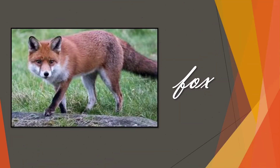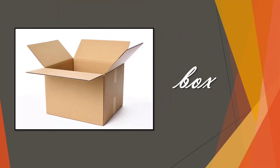The first picture is of fox. F-ur, ox — fox. Children, this is the picture of a box. B-ur, ox — box. B-ur, ox — box.